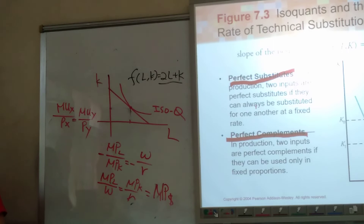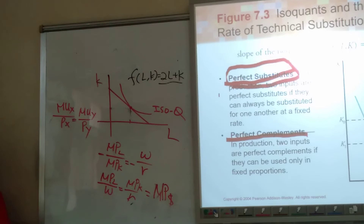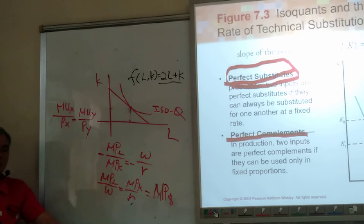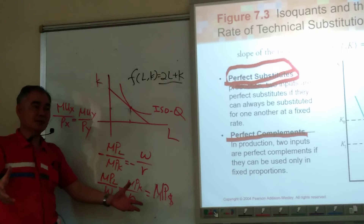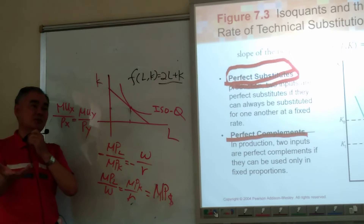Can anyone give me an example of perfect substitutes? Let's use a consumer example since it's easier. For perfect substitutes: for example, you have big pizza and small pizza, or medium pizza. For perfect complements: coffee with sugar, or coffee with milk.